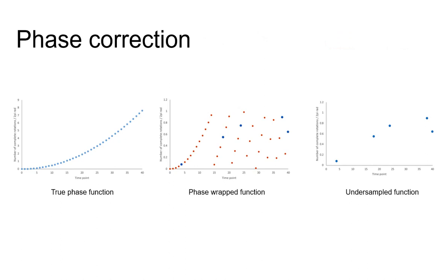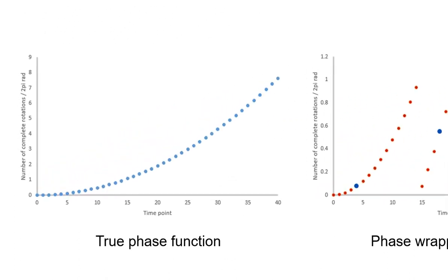The difficult part of the process of producing an absorption mode FTMS spectrum is correcting for the different phase angles associated with ions oscillating at different frequencies. In both ICR and Orbitrap class mass spectrometers there's an algebraic relationship between the ion oscillation frequency and its phase angle, and therefore if we can solve for the function that describes that relationship, we can correct for the phase shift seen in the ion signals, and that's what allows us to produce an absorption mode spectrum.